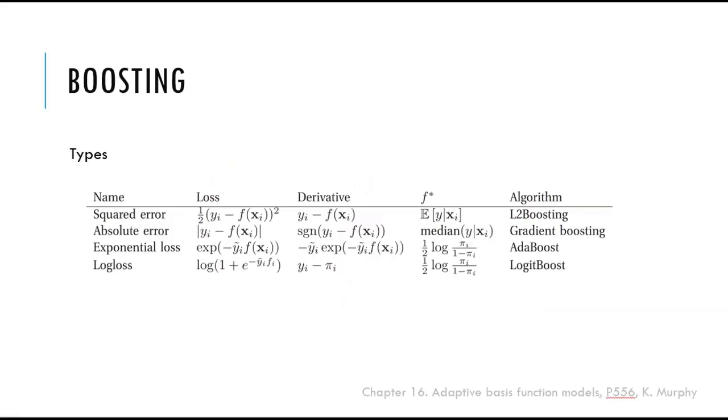The boosting algorithm of training ensemble of learners can be interpreted as a form of gradient descent in a function space. Again, Breiman proved this point of view, and it was extended by Friedman, who showed that how boosting could be extended to handle a variety of loss functions, including for regression, logistic regression, Poisson regression, and so on. One of the famous one is AdaBoost.